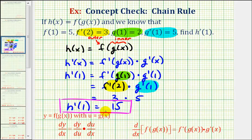Which, as we know, would be the slope of the tangent line on our composite function when x equals positive one. I hope you found this explanation helpful.